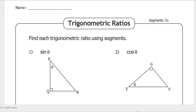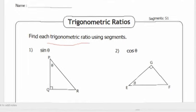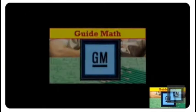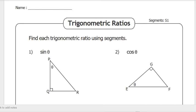Good morning everyone. We are going to find each trigonometric ratio using segments. I will give you an example first. This is a continuation of what we discussed yesterday about the trigonometric ratios. In order for us to solve or find the corresponding trigonometric ratio based on the given triangle, we use the following method.